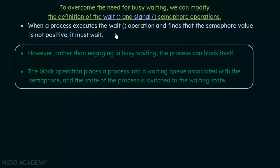When a process executes the wait operation and finds that the semaphore value is not positive, it must wait. In the original definition it gets stuck in the while loop. Rather than engaging in busy waiting, the process can block itself. The block operation places a process into a waiting queue associated with the semaphore, and the state of the process is switched to the waiting state.